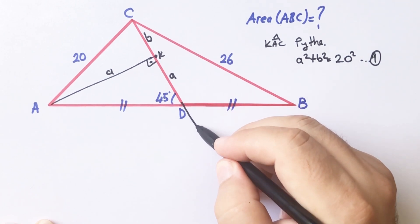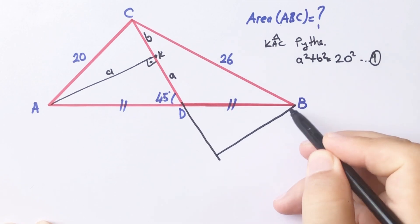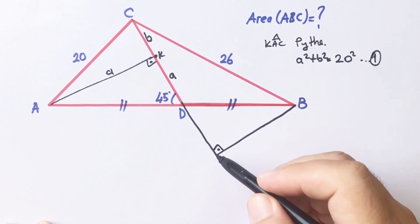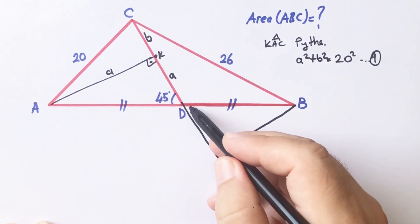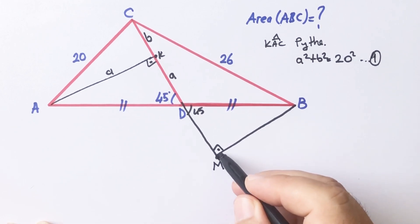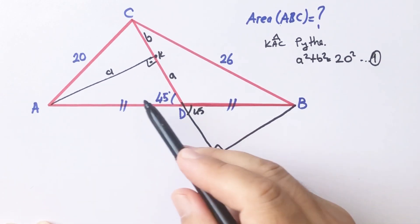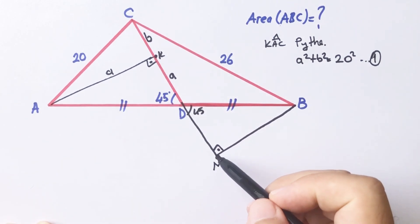And then, if we extend here and draw one more perpendicular line. If it is 45 degrees, this angle must be 45 degrees. Let's call here M point. If you notice, we get two congruent triangles.